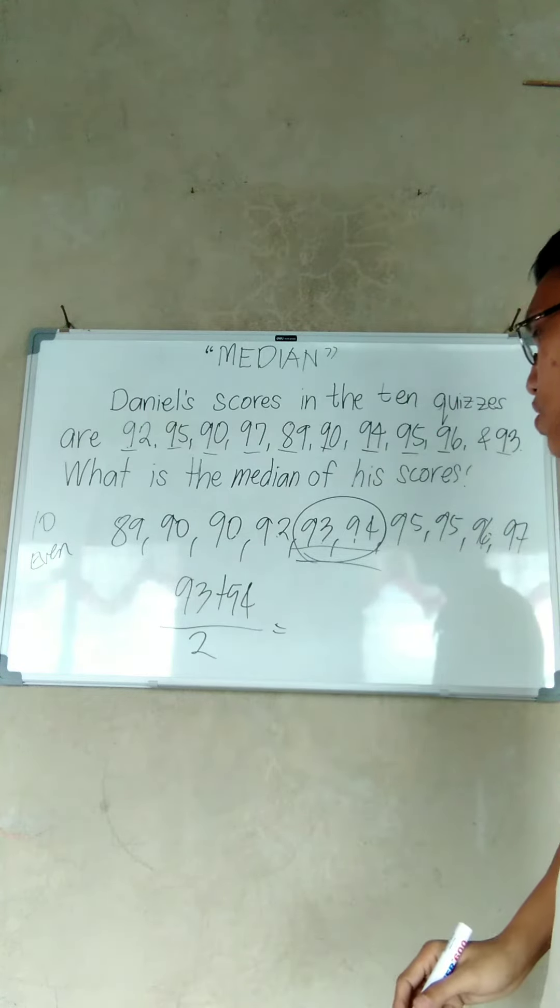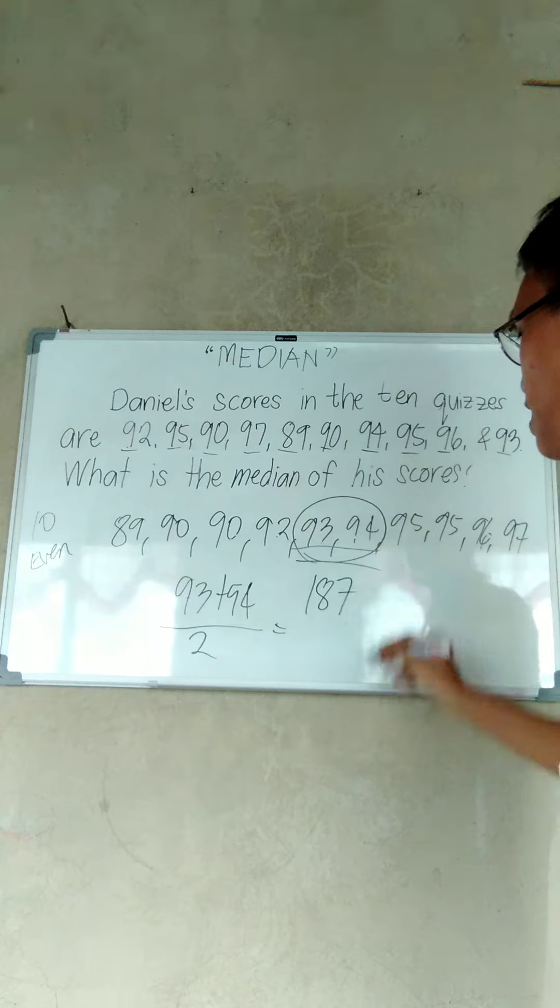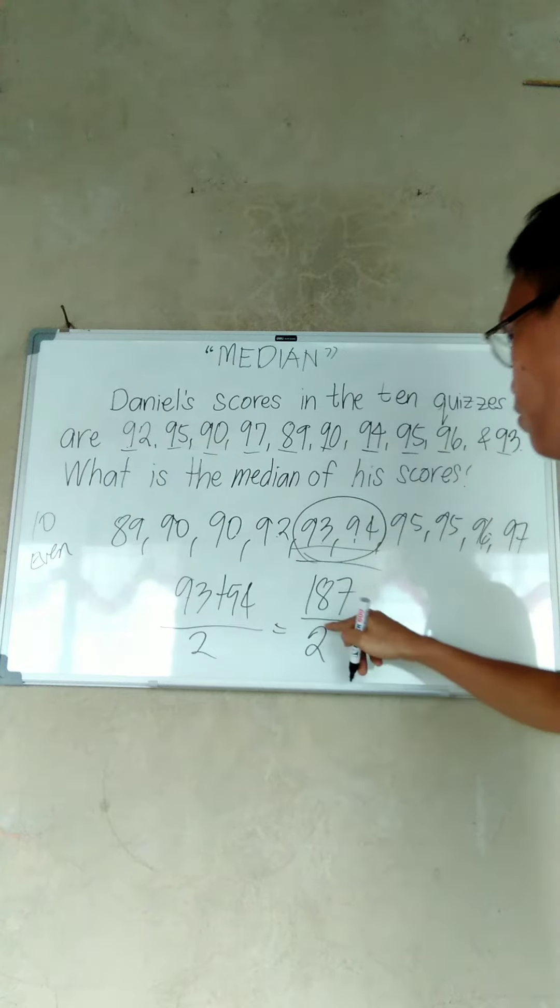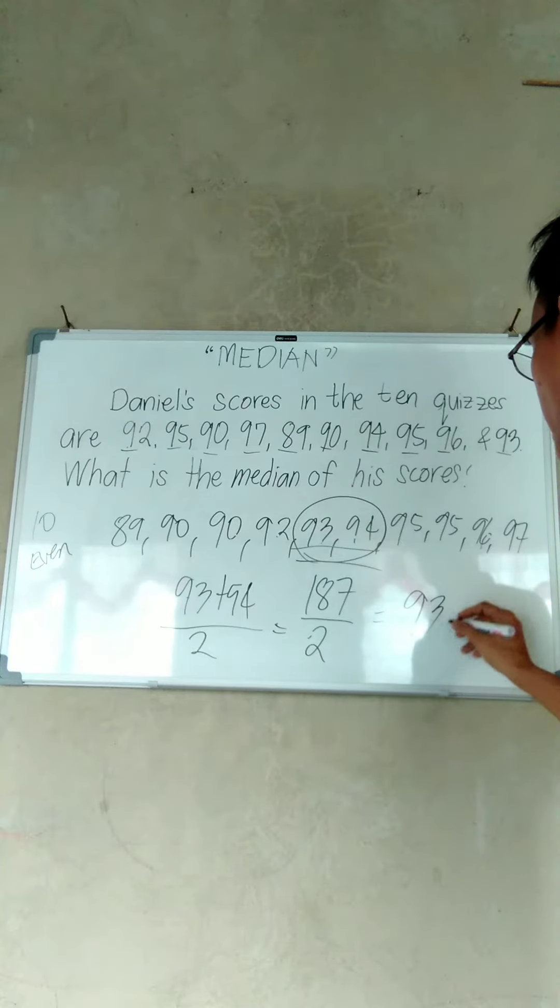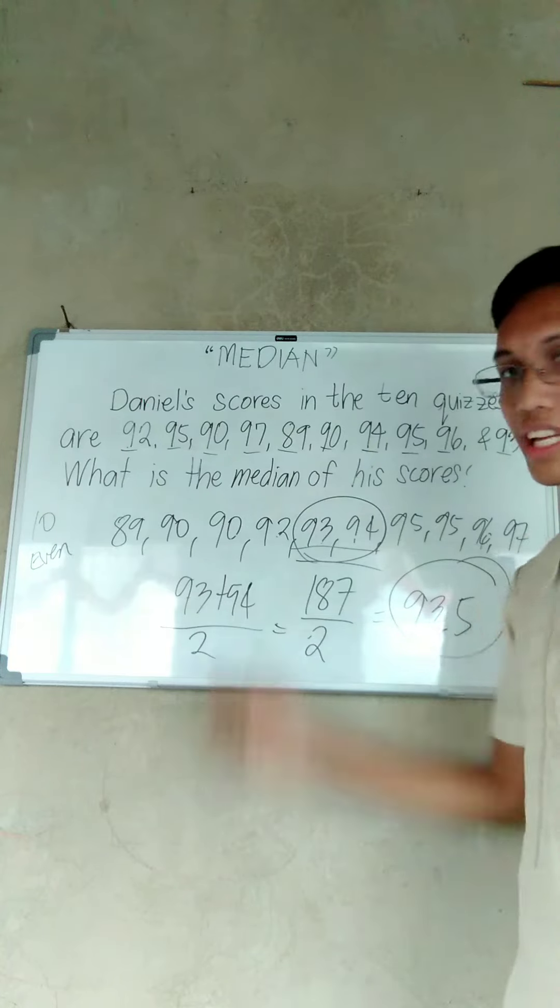So 93 plus 94, that's 187. 187 divided by 2 equals 93.5. So this is our median of the given example.